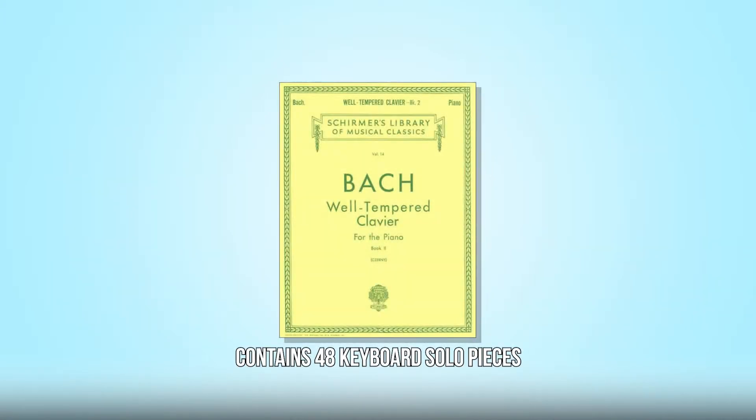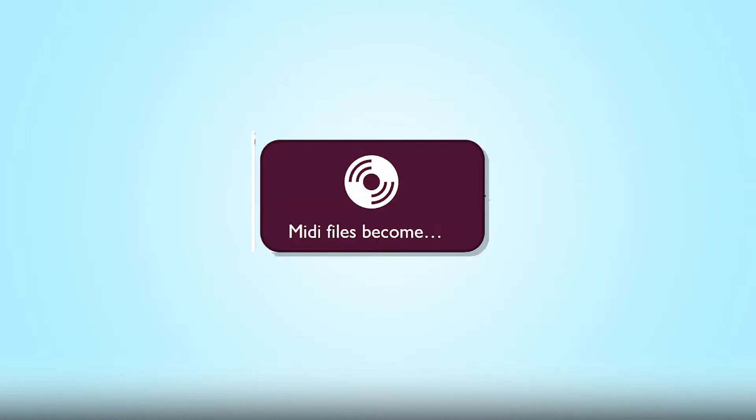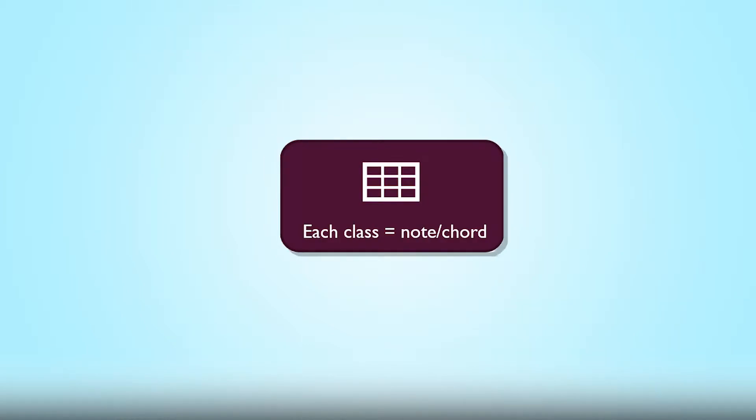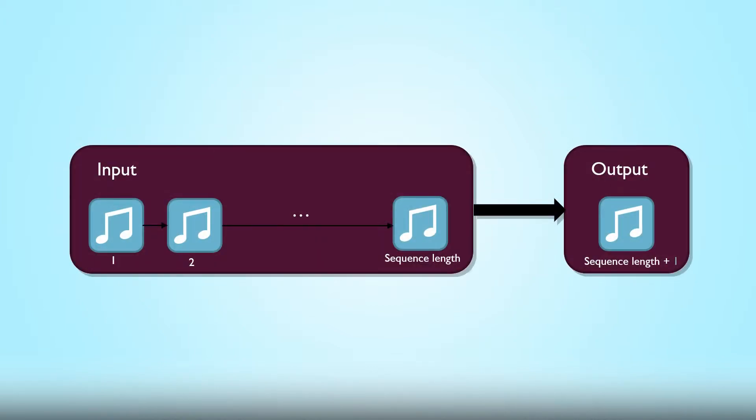And we can use those LSTMs to generate music, which is exactly what we have done. We trained an LSTM network on the entirety of Bach's Well-tempered Clavier 2 pieces, which we parsed like so. We first turned the MIDI files into a list of notes and chords. We then defined each note, or chord, to be one class. And finally, we defined our training dataset to have, as input, a fixed-length sequence of notes or chords, and as output, the note following that sequence.